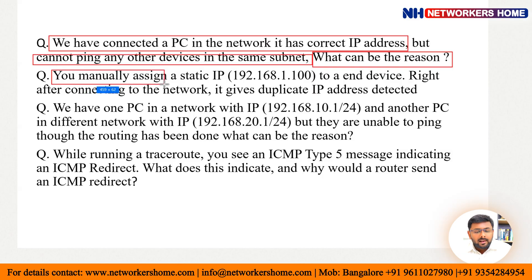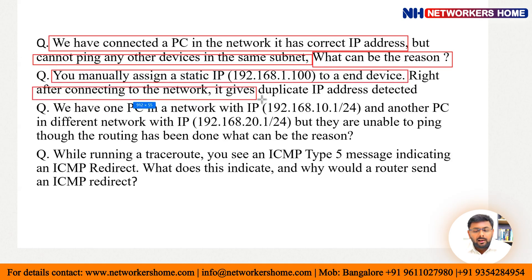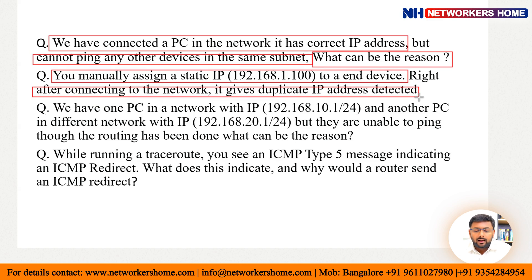Second question: you have manually assigned a static IP that is 192.168.1.100 to an end device, then right after connecting to the network it gives a 'duplicate IP address detected' message. When we are assigning IP addresses to end devices, we suddenly get a message that a duplicate IP address has been detected. We need to discuss why we get this message about the duplicate IP address that has been detected.